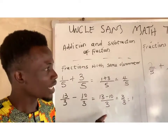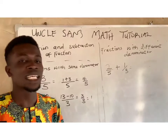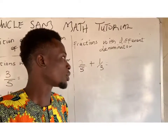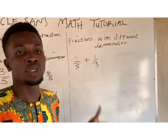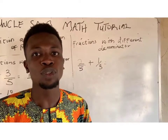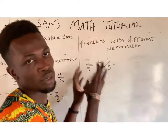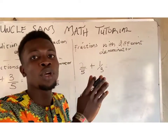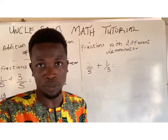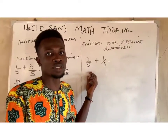Now let's go straight into fractions with different denominators: 2 over 5 plus 1 over 3. Both fractions do not have the same denominator, so what are we going to do? First, before we can solve these fractions together, we have to find a common multiple — we call it the lowest common multiple of these two fractions.